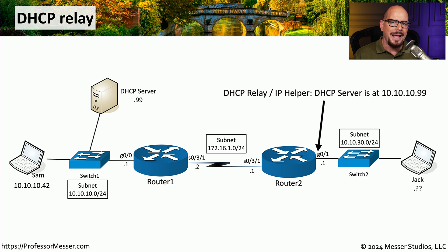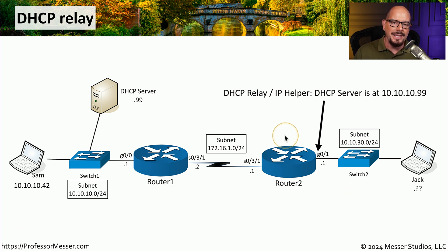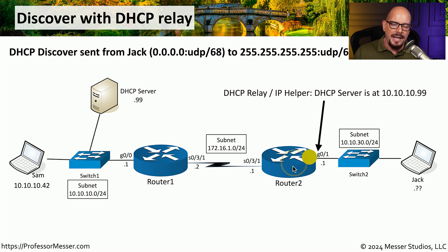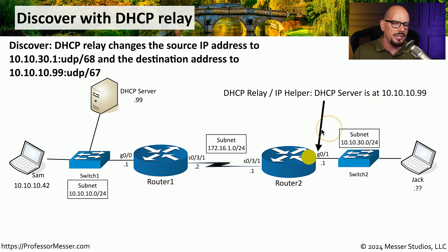We refer to this router functionality as a DHCP helper, or a DHCP relay. This allows you to send DHCP traffic to another subnet, even though it's being sent originally as a broadcast. We would first configure a router with a DHCP relay configuration, specifying that there is a DHCP server located at 10.10.10.99. In this scenario, Jack would like to receive a DHCP address, but there is no DHCP server on Jack's local subnet. Jack's laptop doesn't know this, however, and will simply send the normal DHCP discover message out to everyone on the local subnet. When that broadcast is received by the router configured with DHCP relay, it will relay that information to the DHCP server at 10.10.10.99.